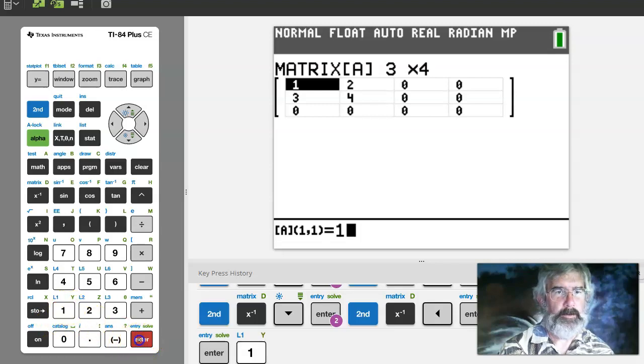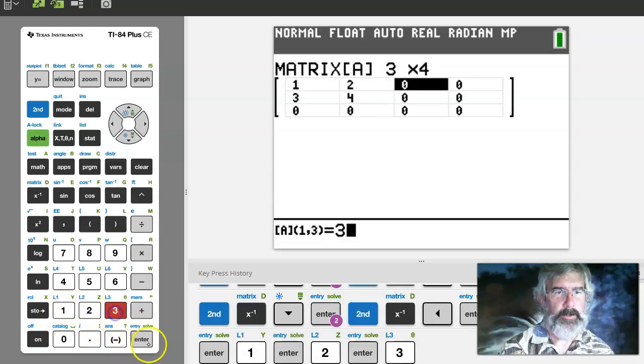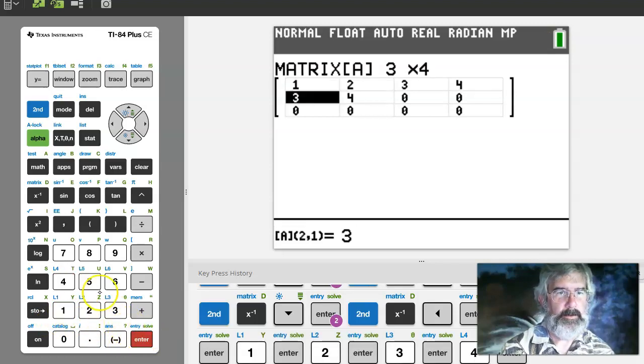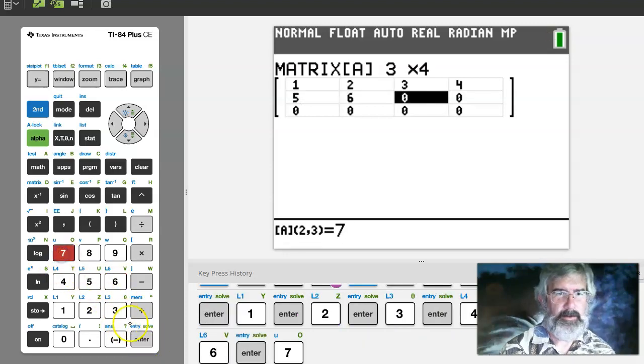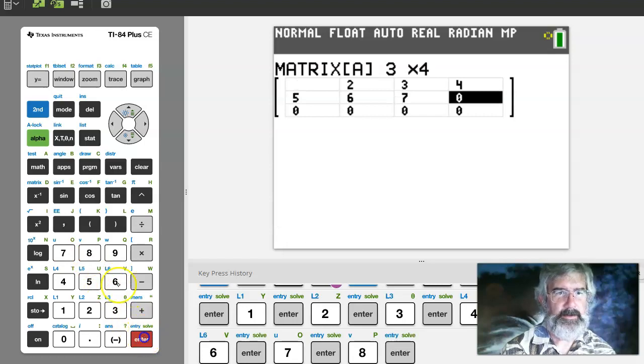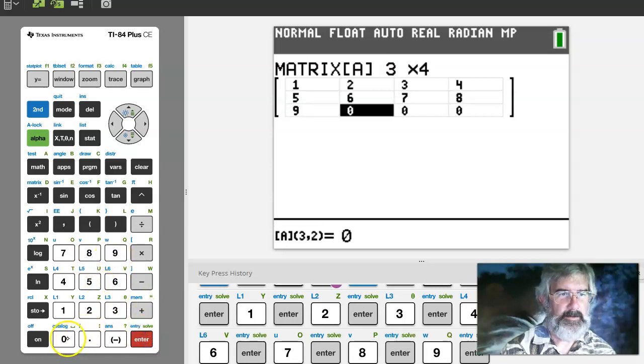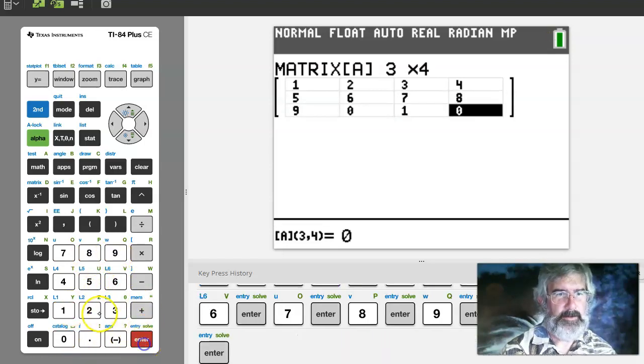I'm now going to make it a 3 by 4 matrix. Now we're going to do 1, 2, 3, 4, 5, 6, 7, 8, 9, 0, 1, 2.